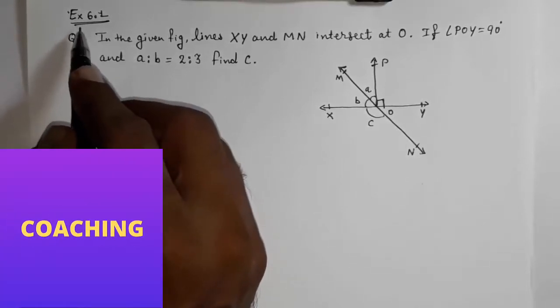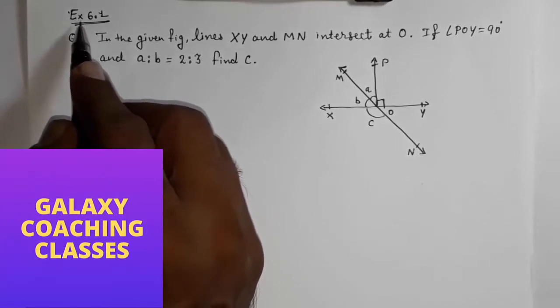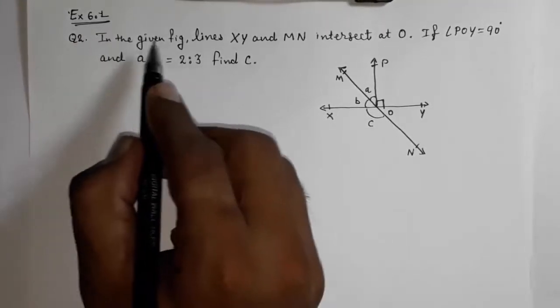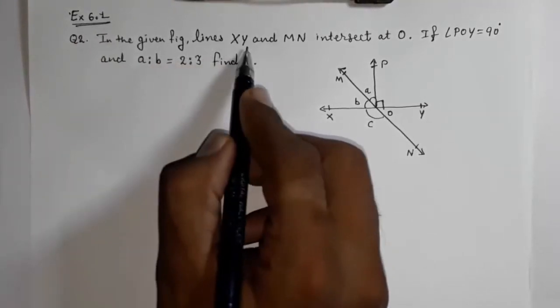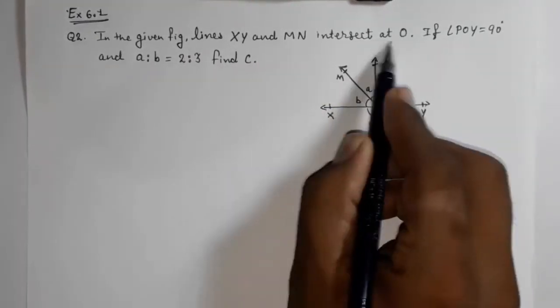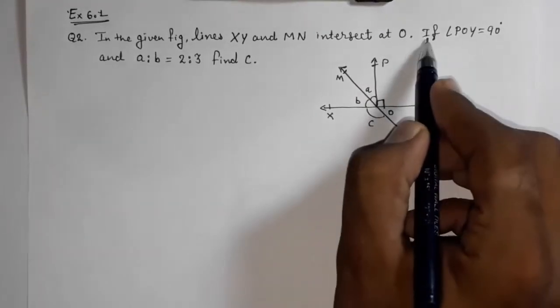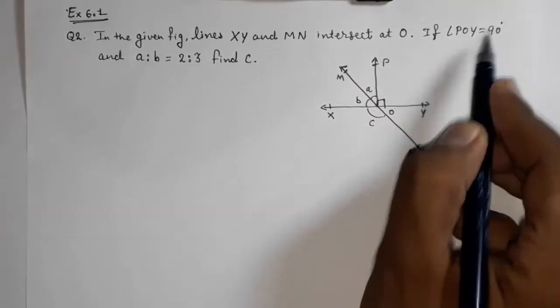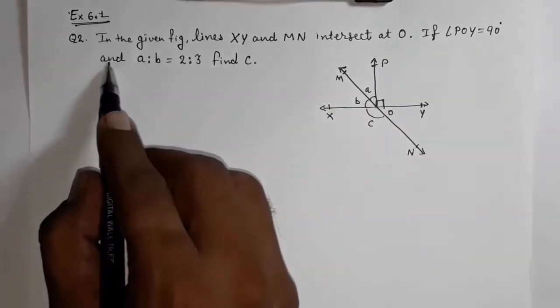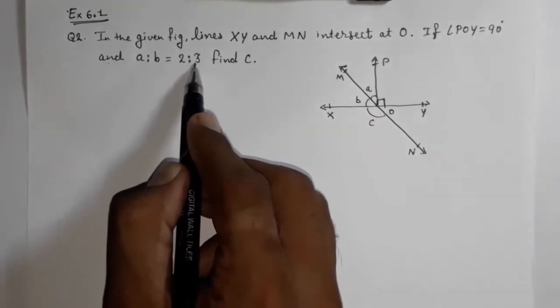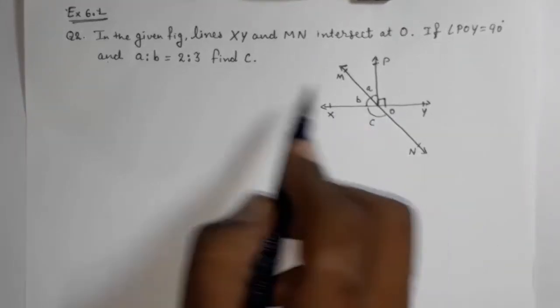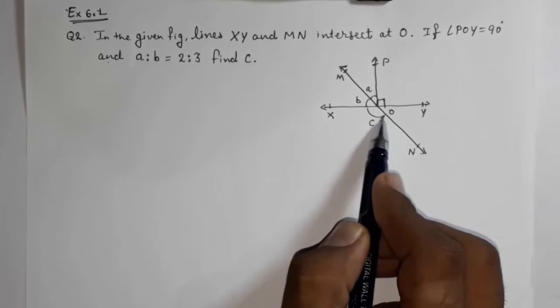Hello friends, today we are going to solve CBSE Class 9th Exercise 6.1, Question Number 2. In the given figure, lines XY and MN intersect at point O. If angle POY is equal to 90 degrees, and a is to b is equal to 2 is to 3, find angle c.